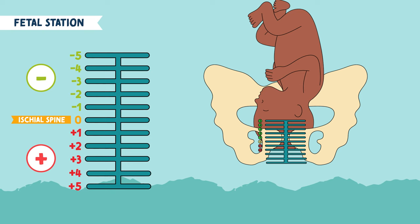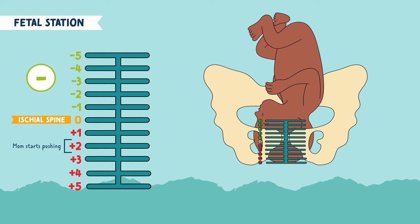Plus two is typically when the mother starts pushing the baby out. Plus four and plus five means birth is imminent, meaning the baby is on the exit route out. Birth is about to happen, and the baby is most likely crowning.